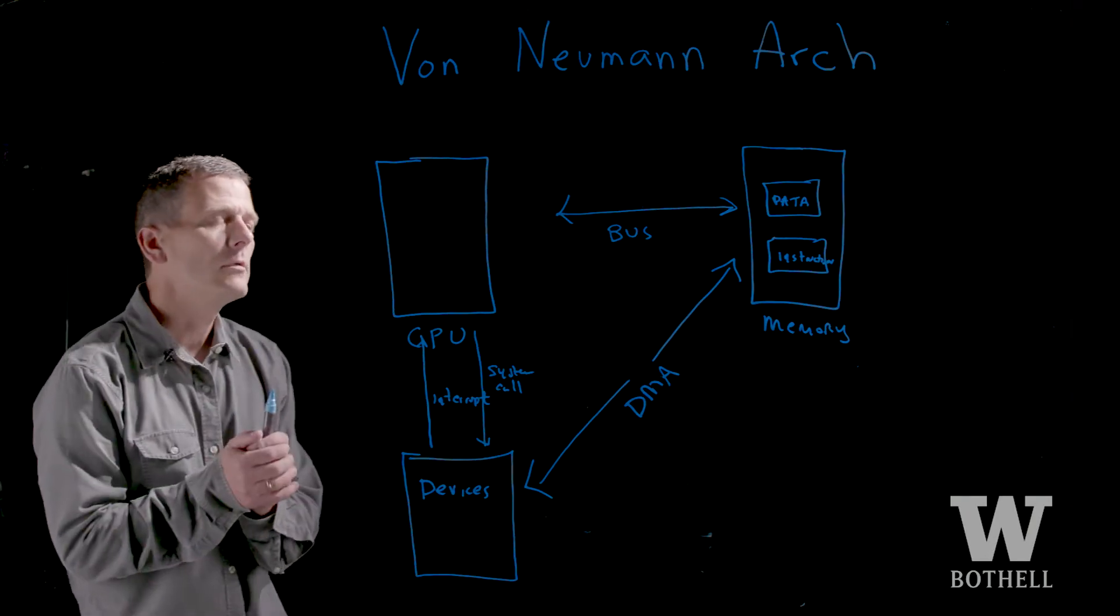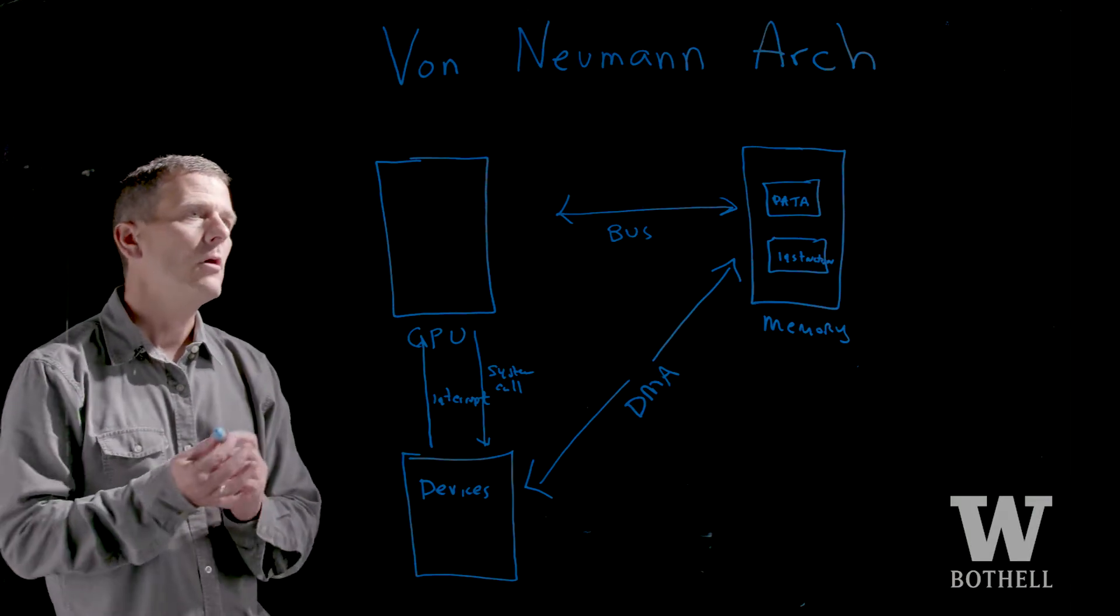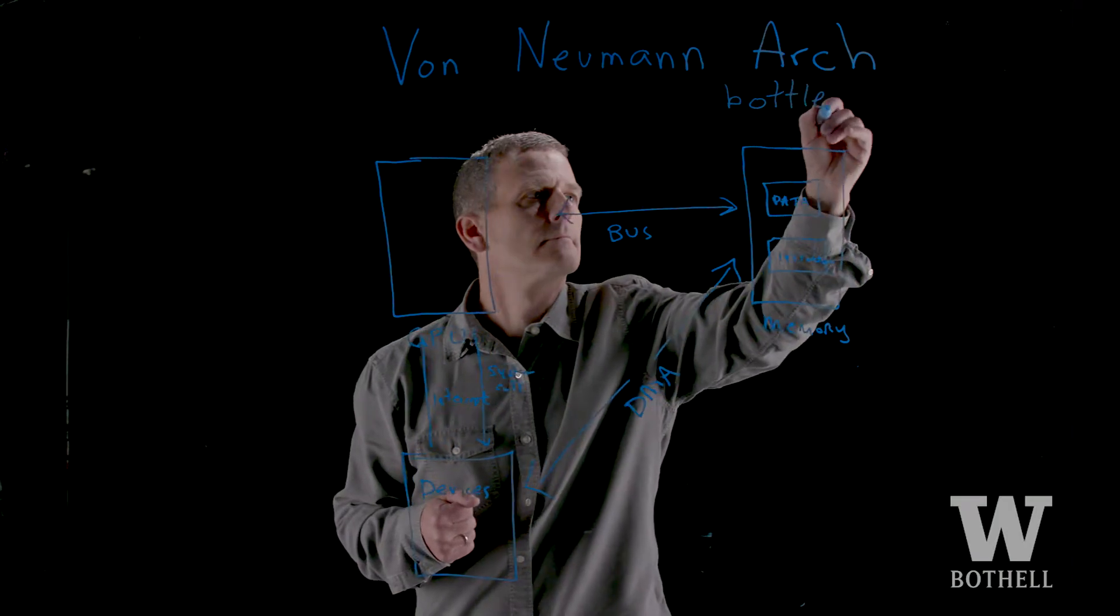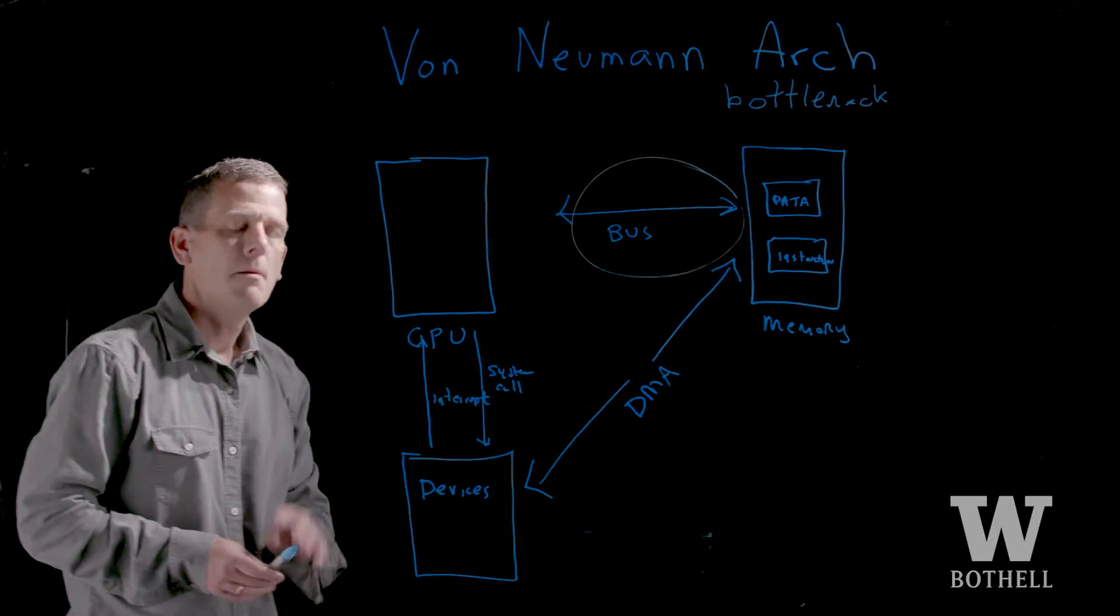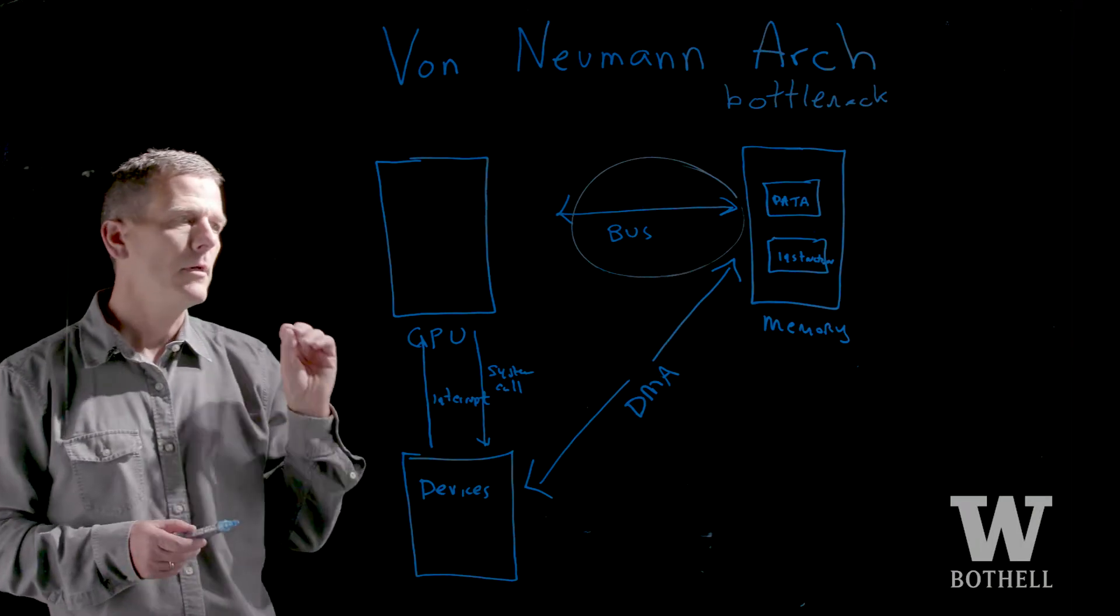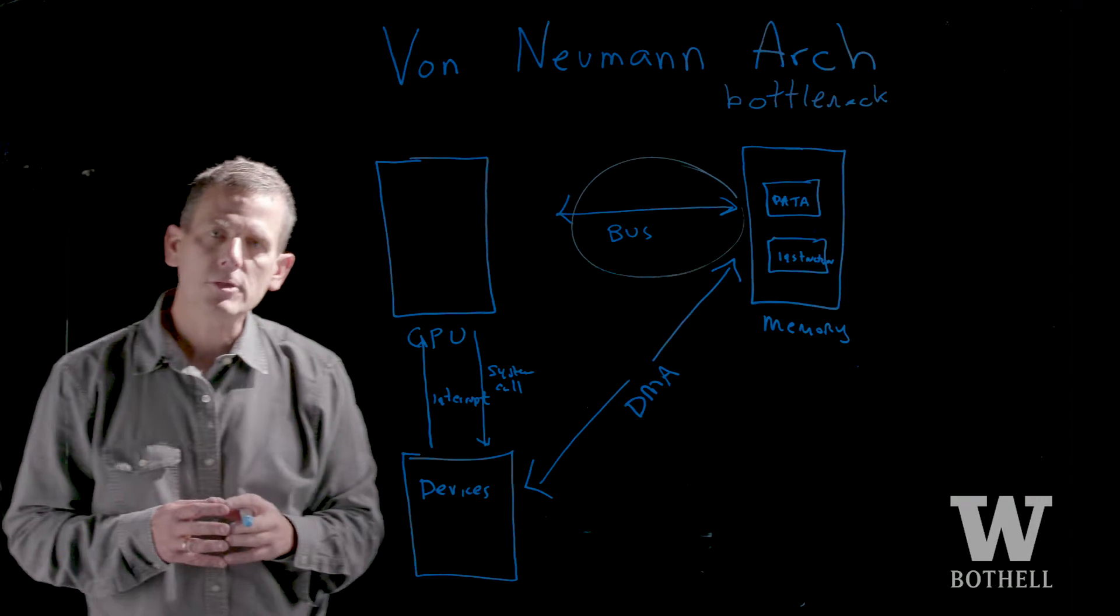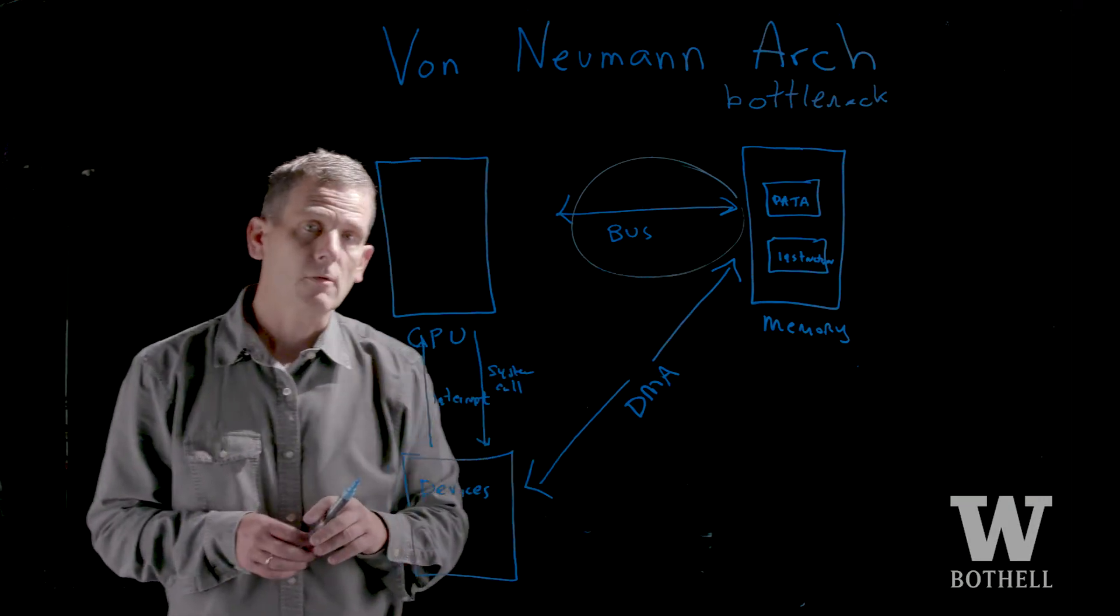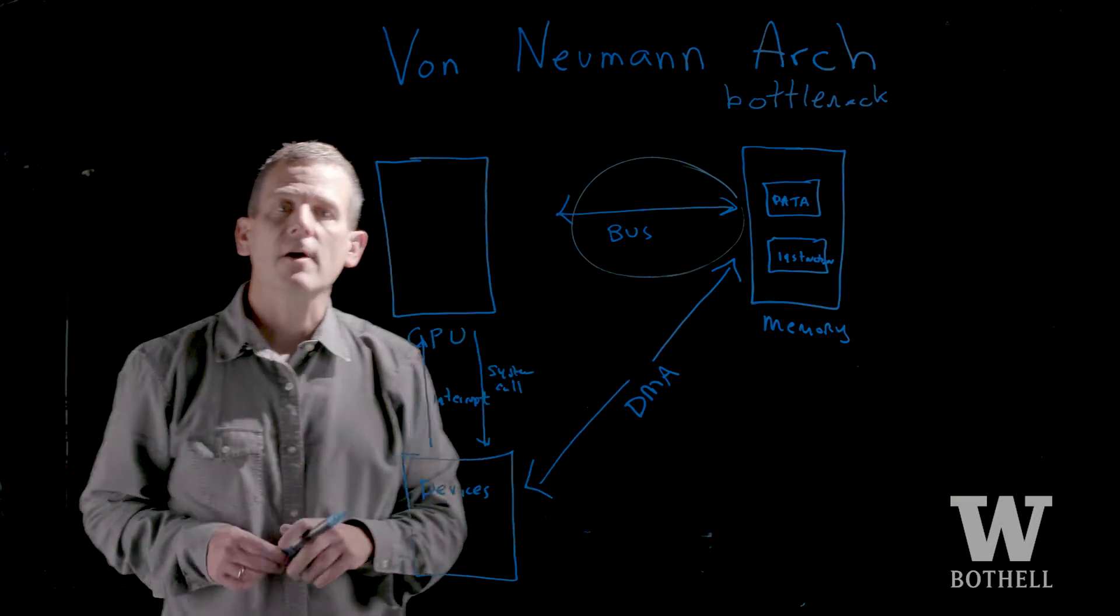Let's look at the architecture in a little more detail. There is one fundamental problem, often called the Von Neumann bottleneck. And that is the bus. Both the data and the instructions have to go over this bus. The bus runs at a much slower clock speed than the CPU and sometimes the memory itself. And so all computers are bound by this Von Neumann bottleneck.